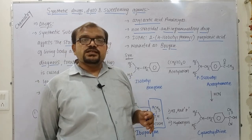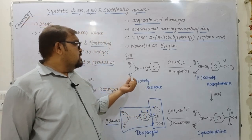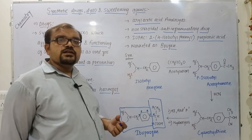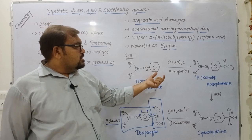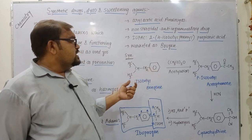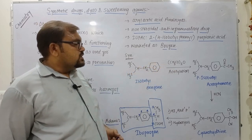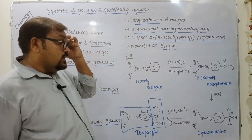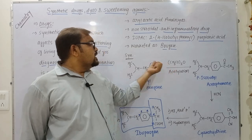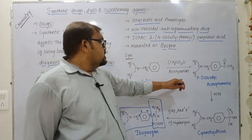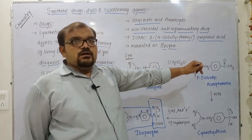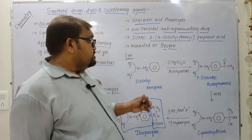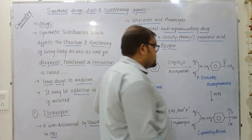The important part is the synthesis of ibuprofen. The starting material is isobutylbenzene. When we carry out acylation or acetylation of isobutylbenzene, the para-position is occupied by the acetyl group and we get para-isobutylacetophenone. The isobutyl group has steric hindrance at the ortho position, so we get the para-substituted product — para-isobutylacetophenone — as the major product. The next step is reaction with hydrogen cyanide.